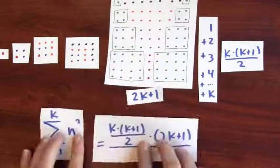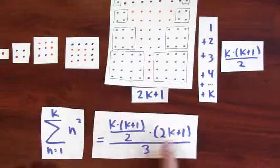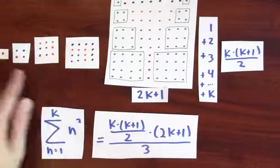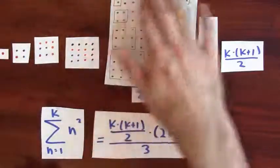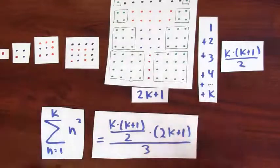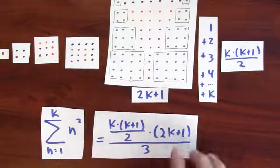Well, it's the height of this rectangle times the width of this rectangle divided by 3, since I used 3 copies of these squares to build the big rectangle. So I end up dividing by 3. And this is, in fact, the formula that we had. The original formula was k times k plus 1 times 2k plus 1 all over 6. But that's just a rearranged version of this formula.